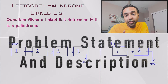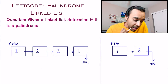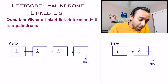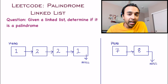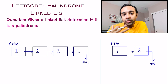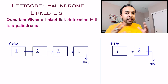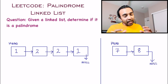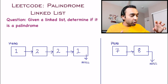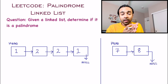First things first, let us make sure that we are understanding the problem statement correctly. In this problem, you are given a linked list and you have to determine if it is a palindrome or not. A palindrome is simply a sequence of integers, characters, or anything that reads the same if you read it from front to back or from back to front.